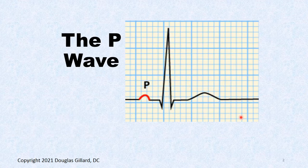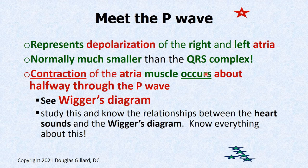First, let's talk about the P wave a little bit. There it is right there, and it represents the depolarization of the right and left atria, normally much smaller than the QRS complex. It's an electrical ECG signal that represents contraction of the atria. The contraction occurs about halfway through the P wave, moving left to right.